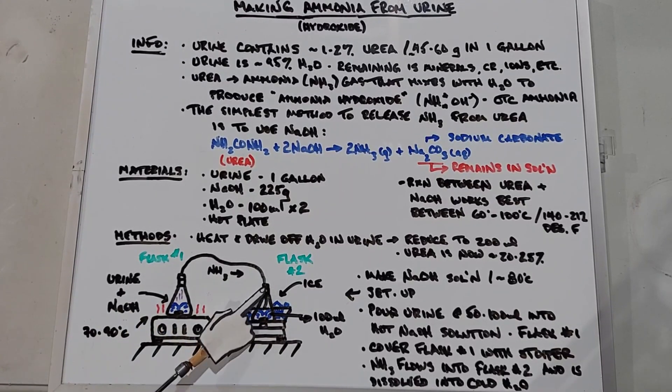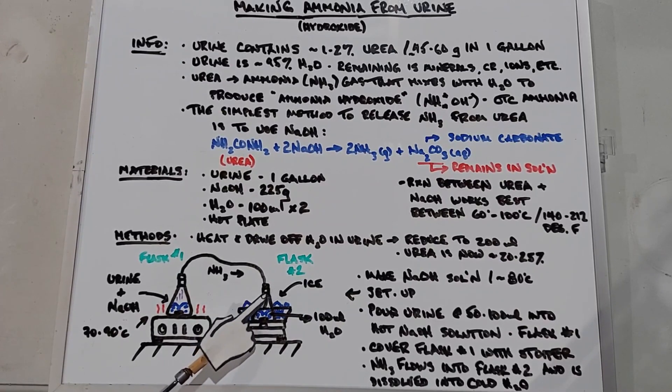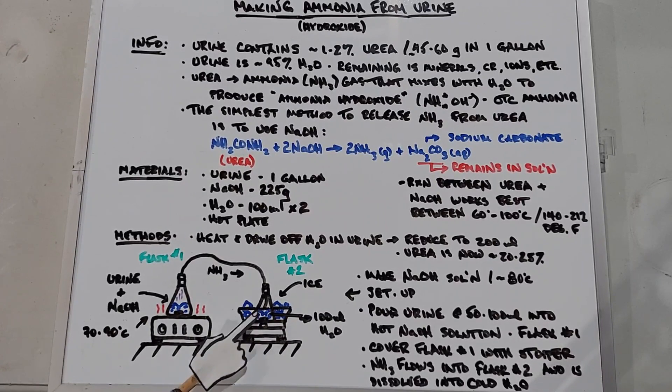The ammonia will come through here. This will be unstopped, the top of this flask will be open, and then the ammonia gas can come in here close to the water which will be swirling about and dissolve in there. That's how we're going to get our ammonia hydroxide solution from urine.